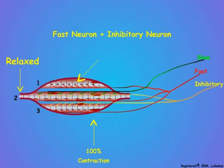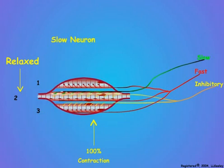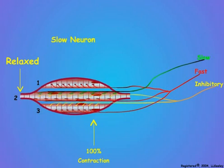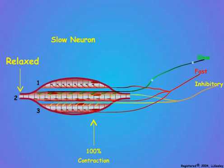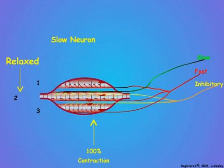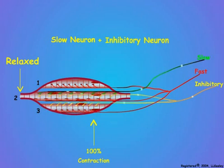In the second case, we see the graded contraction of the muscle by the slow neuron. Note that the contraction is only one-third shortening of the entire muscle since only muscle fiber 2 has the slow innervation. When a slow neuron stimulus is combined with stimulus by the inhibitory neuron, the slow neuron stimulation is blocked completely and muscle fiber 2 is completely suppressed, so there is no muscle contraction.